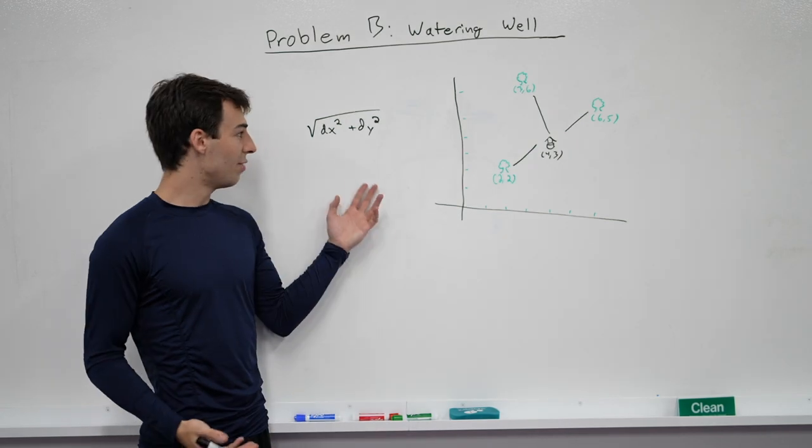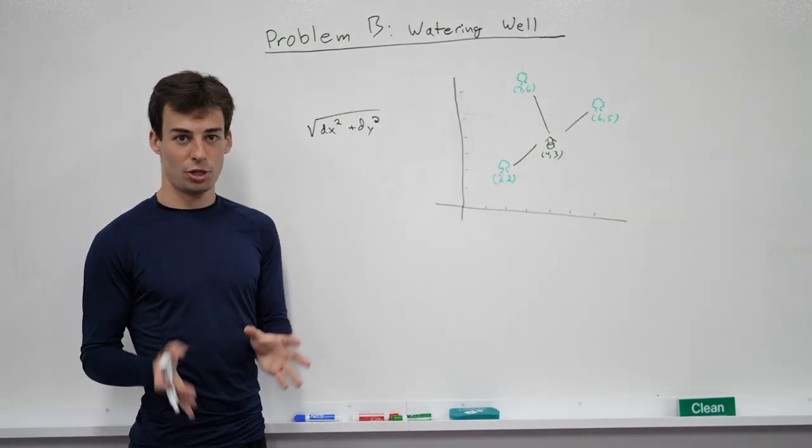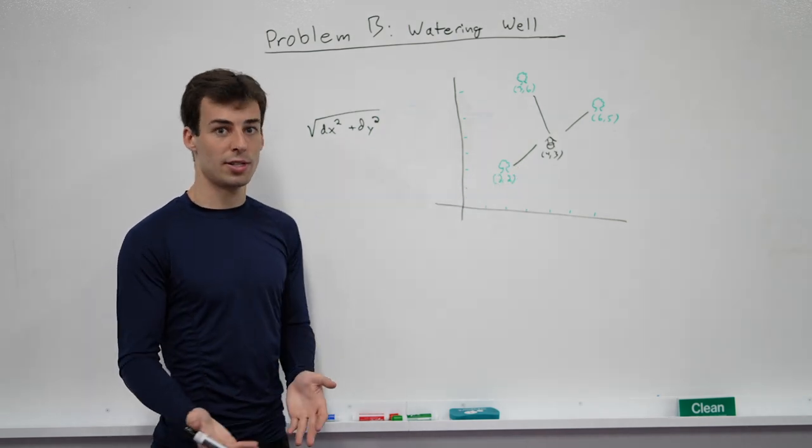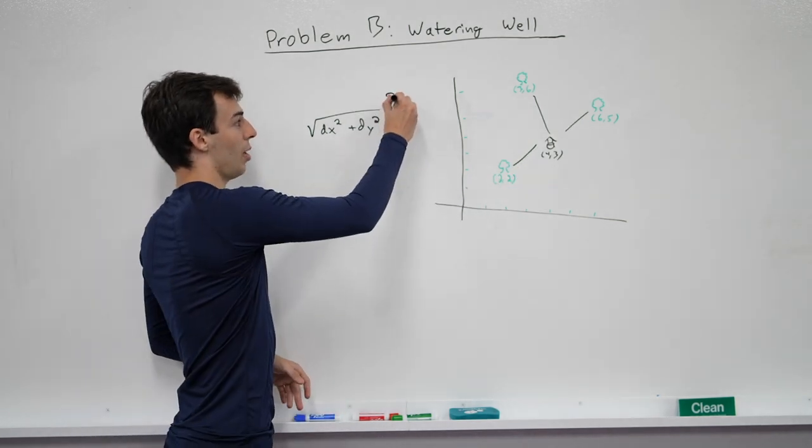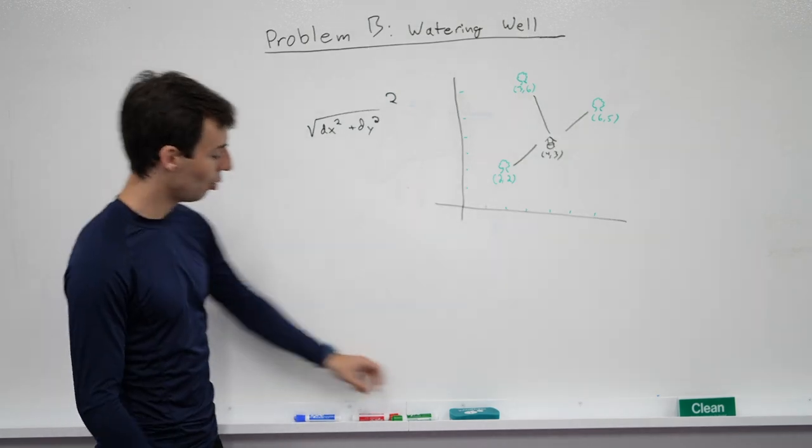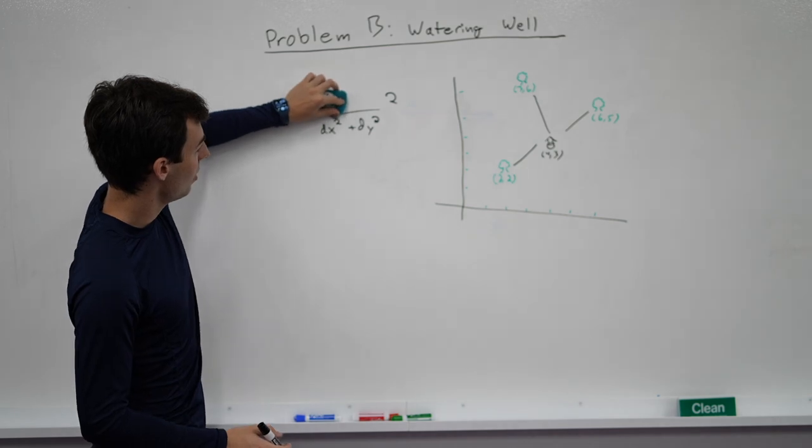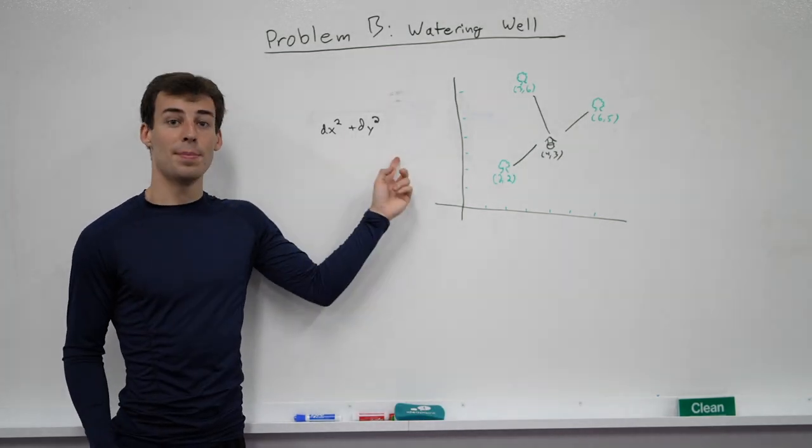So distance is the square root of dx squared plus dy squared. Now, usually, this is a bit of a complicated formula. Square root can be tricky, but we're not actually looking for the distance. We're looking for the squared distance, so it's this squared, and the great part about this is now the squaring and square root cancel each other out, and the x and y coordinates are independent.